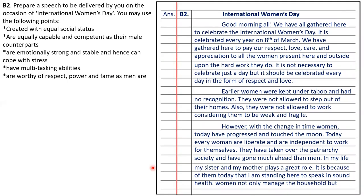The next question, 6B, is to prepare a speech to be delivered on the occasion of International Women's Day. You may use the following points: women are created with equal social status, are equally capable and competent as their male counterparts, are emotionally strong and stable and can cope with stress, have multitasking abilities, and are worthy of respect, power and fame. With the help of these points, you have to write a speech.